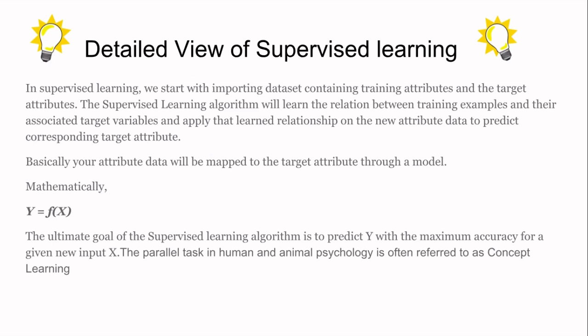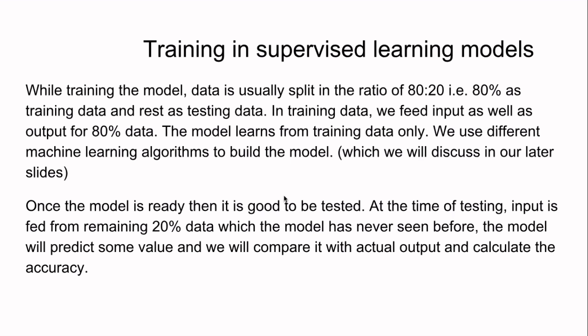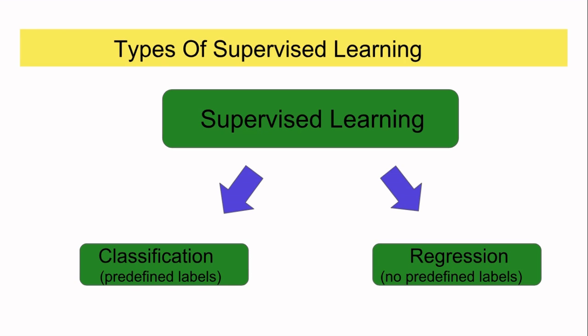We first calculate function F such that it properly maps X with Y for the training examples. After getting that function, we test it on the testing phase and predict the actual Y for any unknown training attribute. For this, we use an 80/20 percent ratio — 80% is training data and the remaining 20% is testing data, used to evaluate the model.